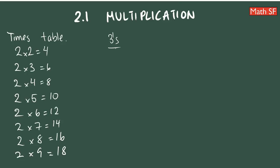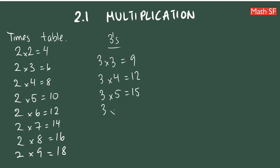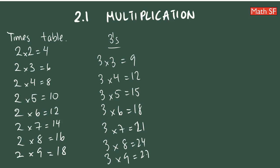For the 3s, do we need to know 3 times 0? No. Times 1? No. Times 2? No — because we already know 2 times 3 is 6 from the 2s table. So we start at 3 times 3 equals 9, then 3 times 4 equals 12, 3 times 5 equals 15, 3 times 6 equals 18, 3 times 7 equals 21, 3 times 8 equals 24, and 3 times 9 equals 27.